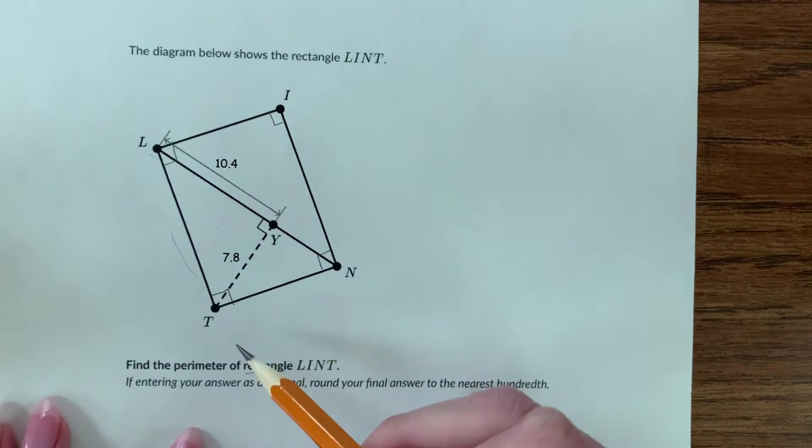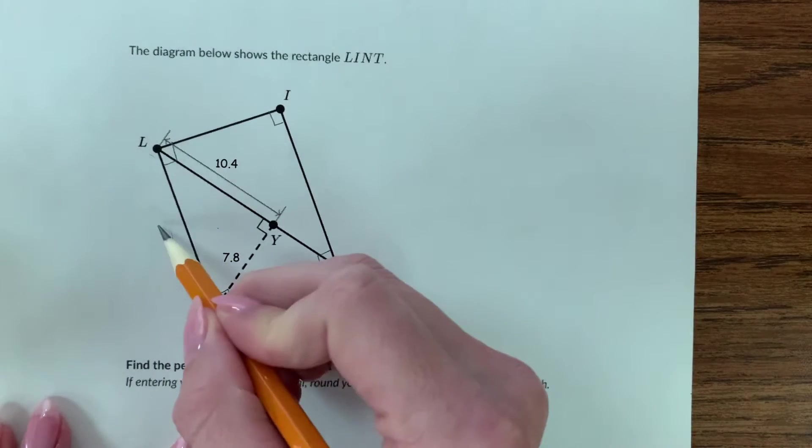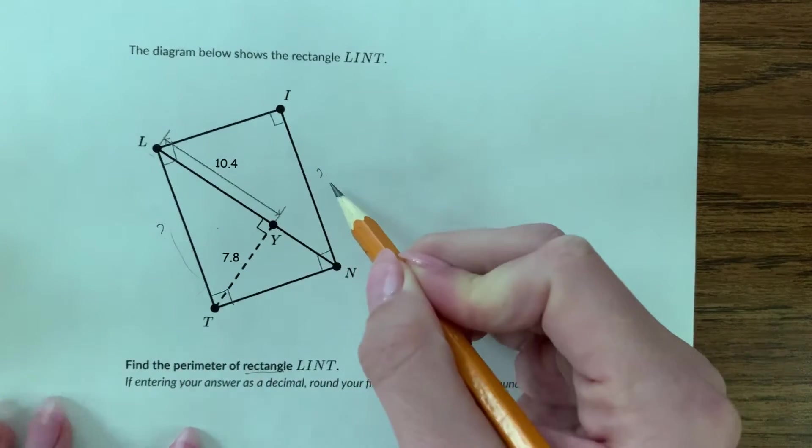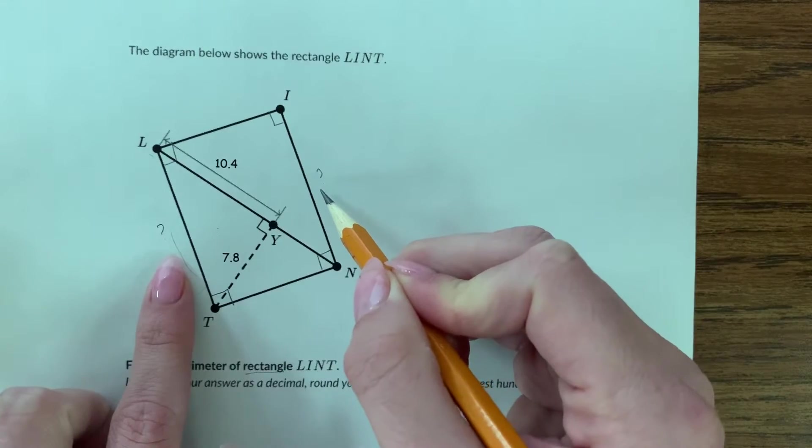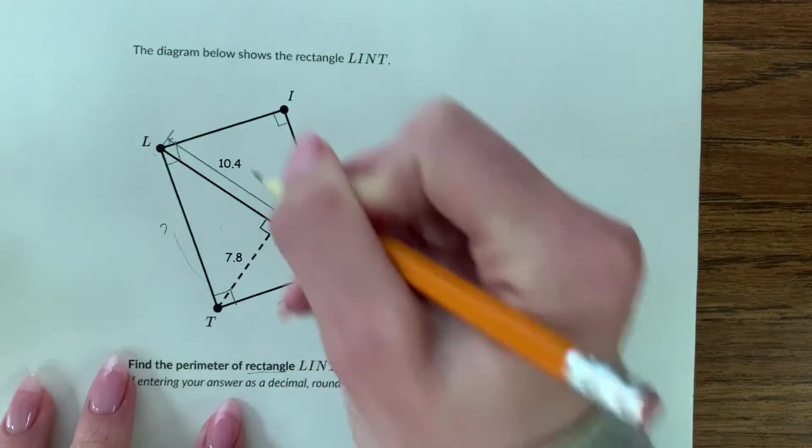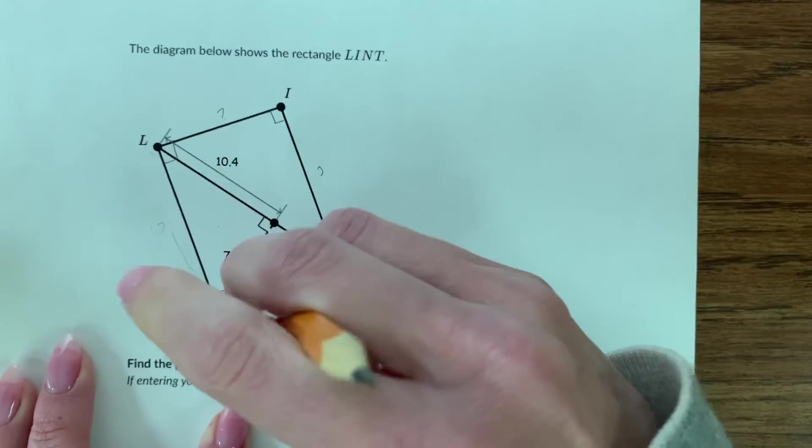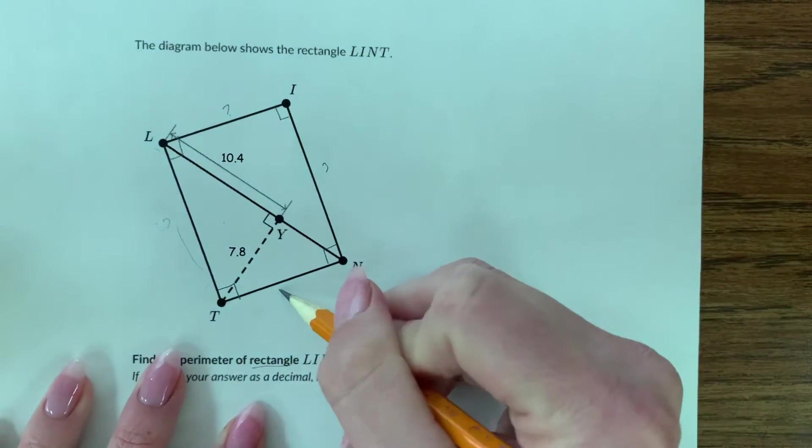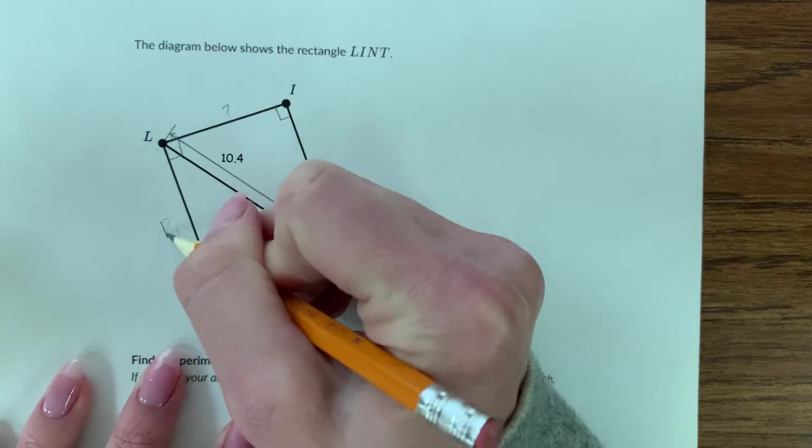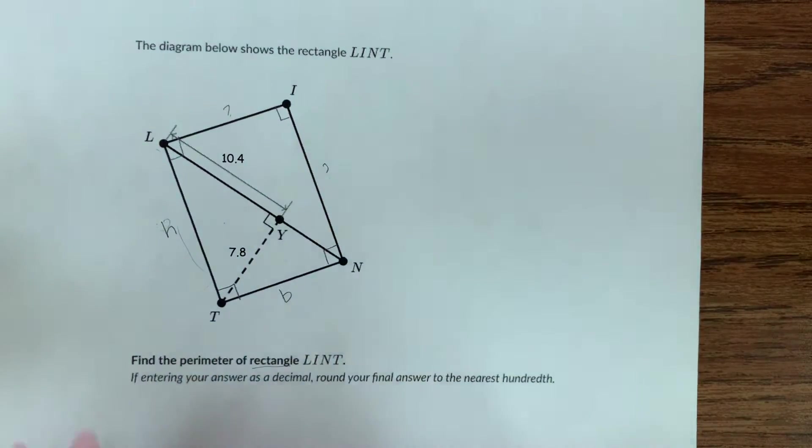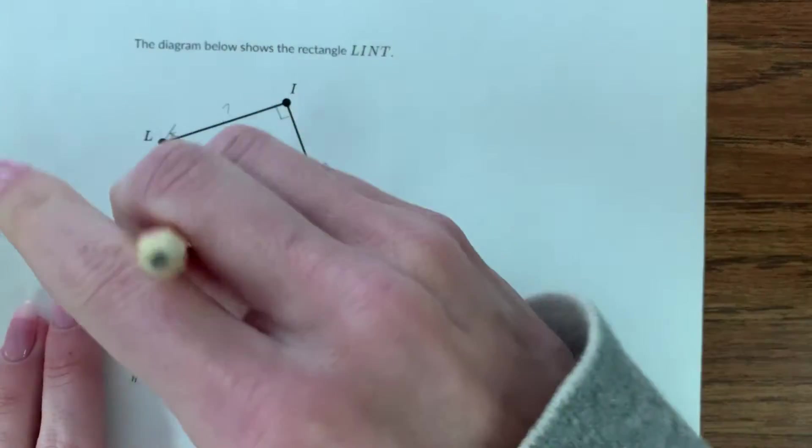The question asks you to find the perimeter of the entire shape. That would involve figuring out this side, this side which are going to be the same because it's a rectangle, this side, and this side. I'm going to call this one B for base and this one h for height, just so we have some variables that can represent our sides.